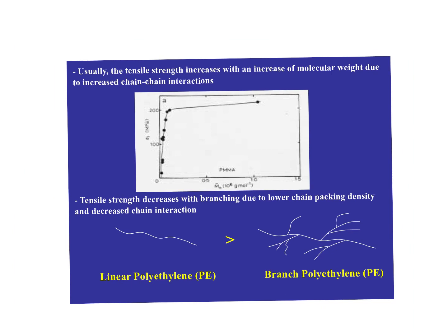Tensile strength increases with an increase in molecular weight due to increased chain-chain interactions. This is demonstrated by number-average molecular weights of 0.1×10⁶, 0.5×10⁶, 1×10⁶ — we see things heal over, and that healing-over process is due to entanglement. Below the entanglement threshold things behave kind of like a liquid; once relatively entangled, the chain-chain sliding process becomes much more inhibited, and suddenly we have a measurable elastic modulus. It stops behaving like a liquid and starts behaving like a solid due to entanglement.